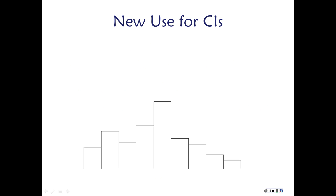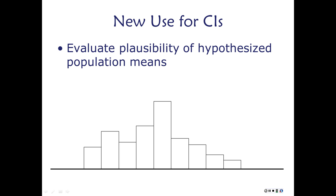A new use for confidence intervals — one of its more common uses — is that we can evaluate the plausibility of any suggested or hypothesized population mean. We can say there's a hypothesis that the population mean should be a certain value. We do a sample and construct a confidence interval. If that hypothesized value is inside the interval, it's plausible and we've supported that theory. If it's outside the interval, we've caused some lack of support for that hypothesis.